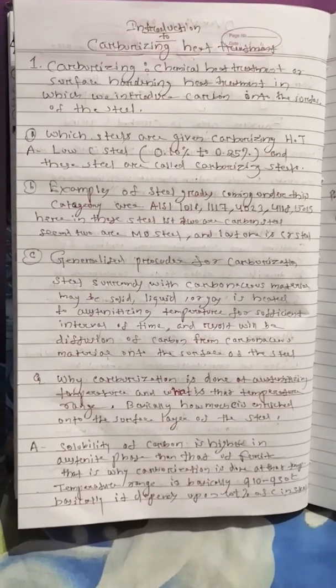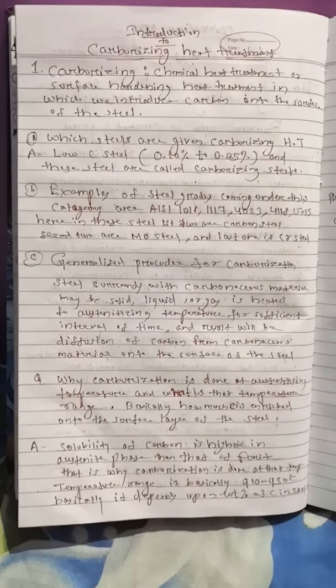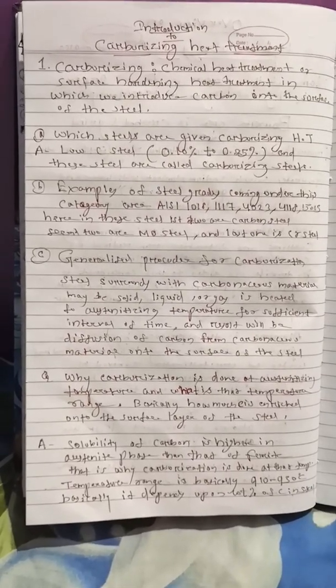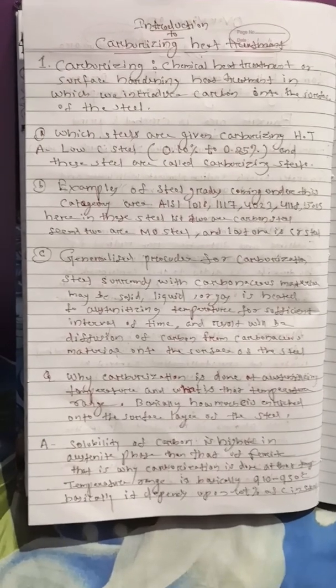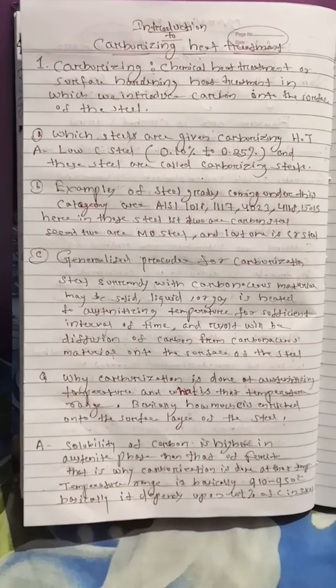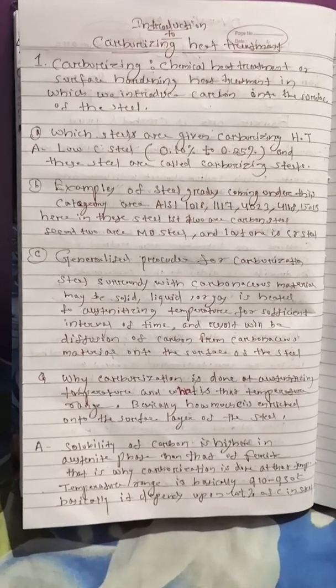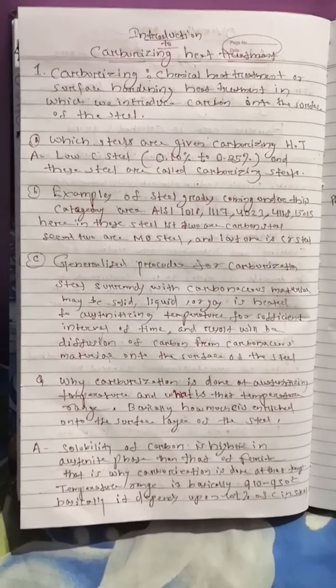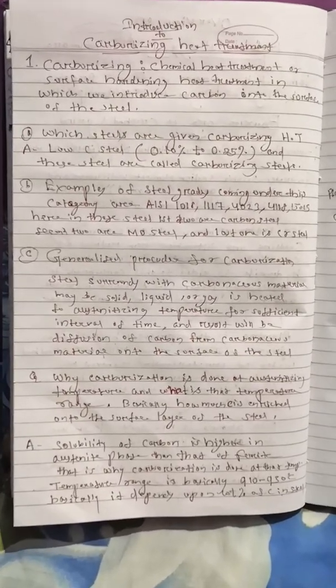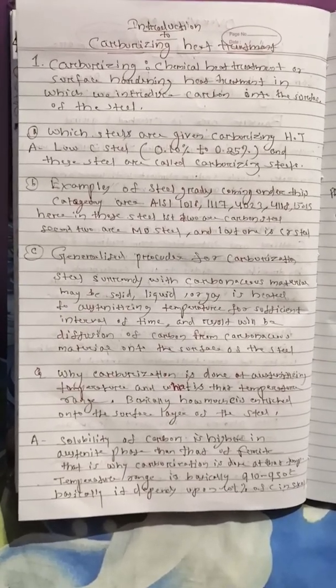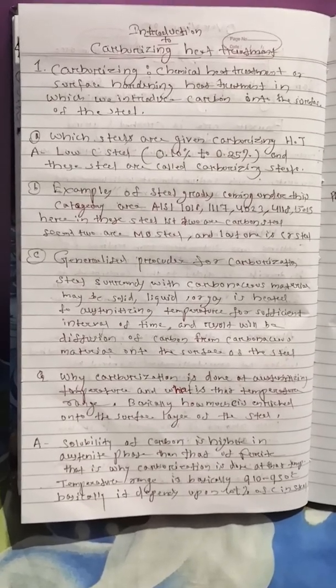Basically all the steels are not preferred for carburizing heat treatment. Only the low carbon steel, that is the weight percentage of carbon is 0.10 to 0.25 percent. These steels are given carburizing heat treatment and these steels are also called carburizing steels. There are certain alloy steels which are also given carburizing heat treatment, for example molybdenum steels and chromium steels.